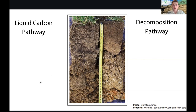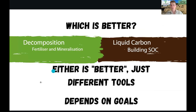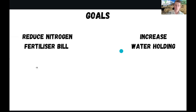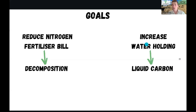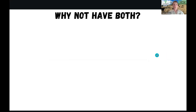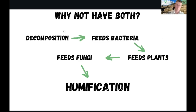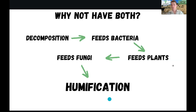Neither is better - they are different tools depending on your goals. If you want to reduce your fertiliser bill, it might be better to look at the decomposition pathway, but if you want to increase water holding capacity, look at the liquid carbon pathway. But why can't we have both? Kempf suggests starting with a decomposition-focused pathway - grow a cover crop and terminate it to feed microbes. The microbes then feed our plants through the rhizophagy cycle, supplying more amino acids and amino sugars, giving the plant more energy to produce lipids. That then feeds the fungi, which increases our humification process. That's a nice way to draw everything together.